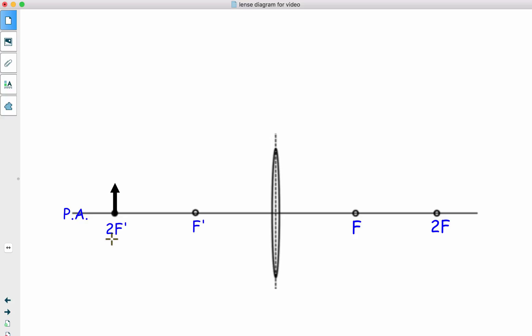If we put the object right on 2F prime. The ray is parallel to the principal axis. Through the focal point. Second ray. Through the focal point. Until you hit the center of the lens. And then out parallel.